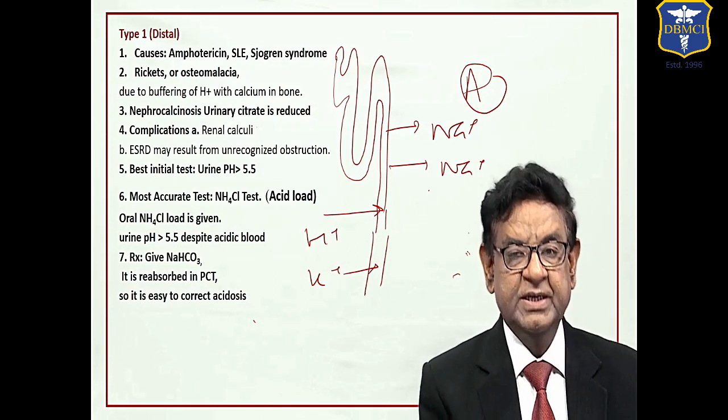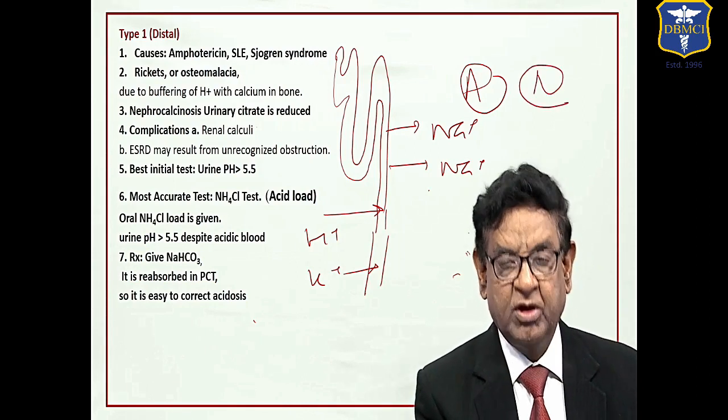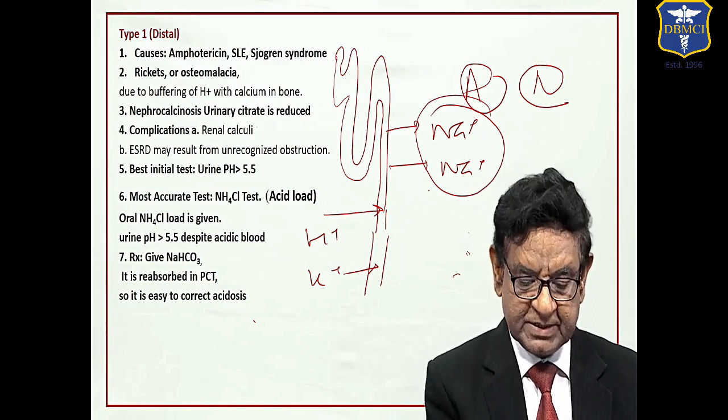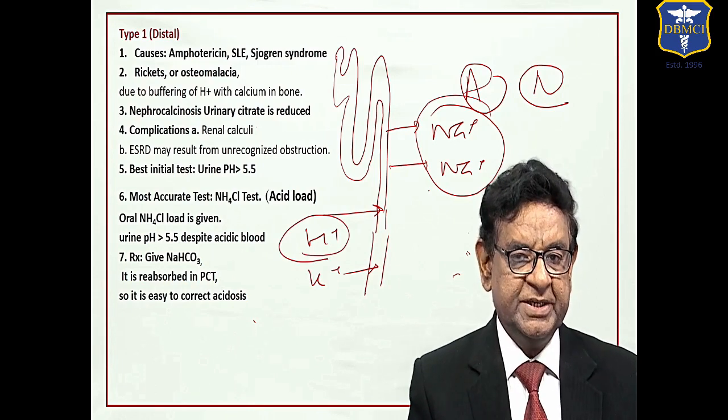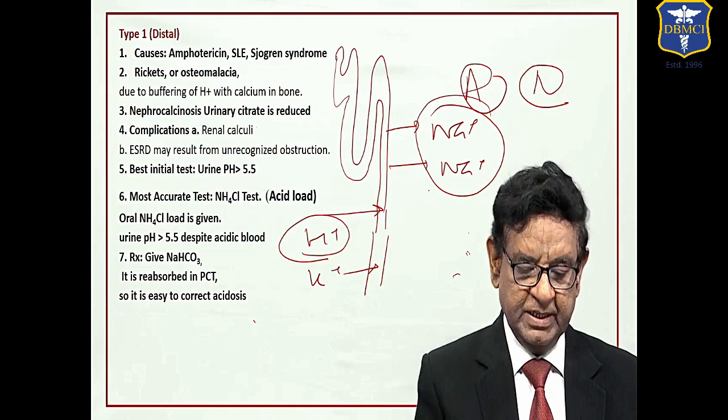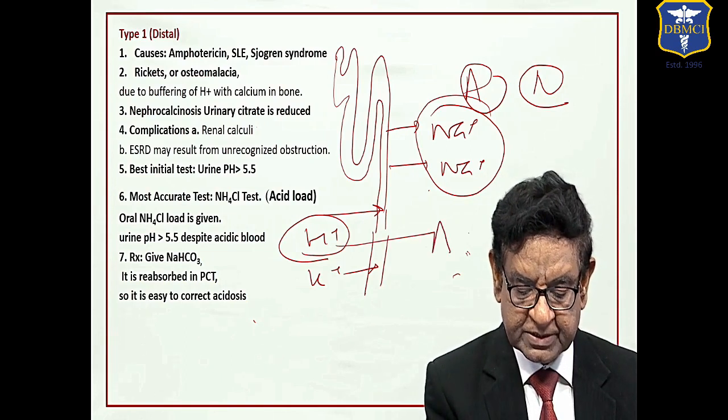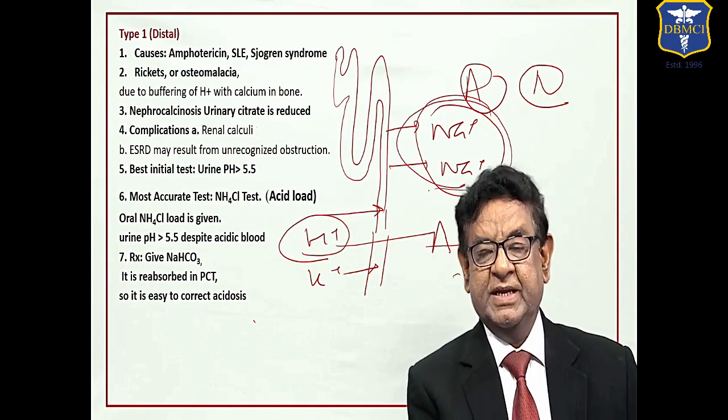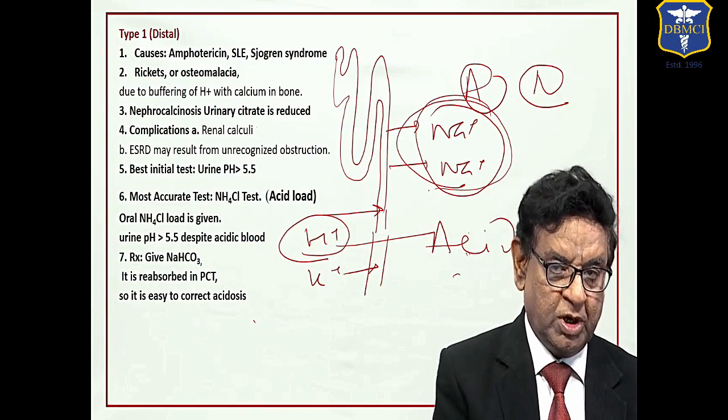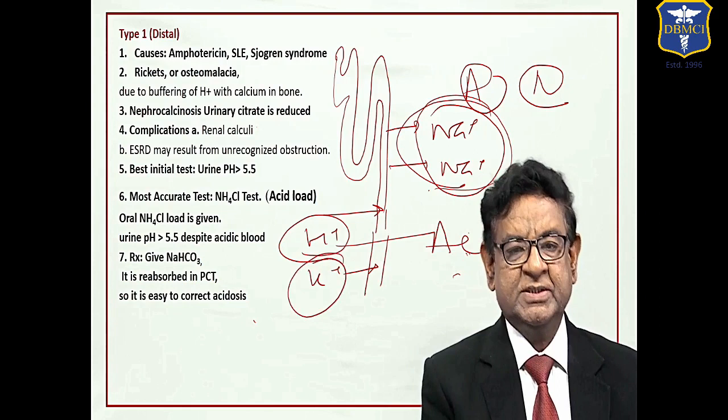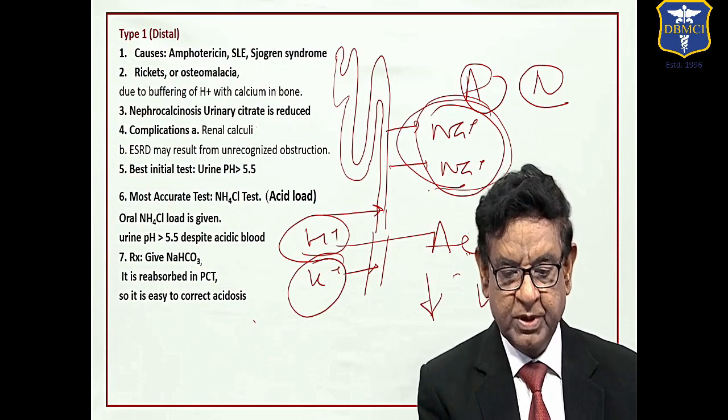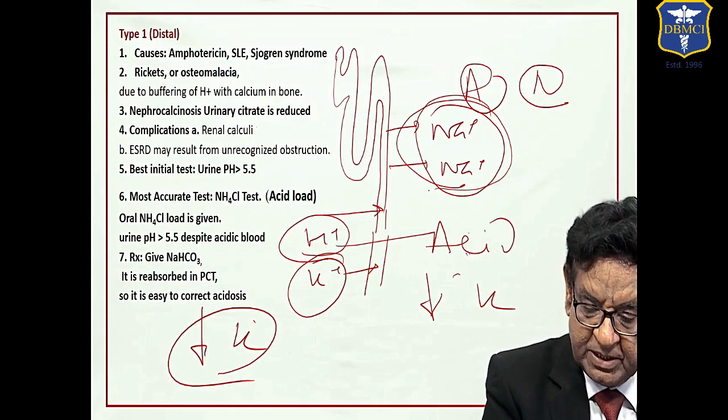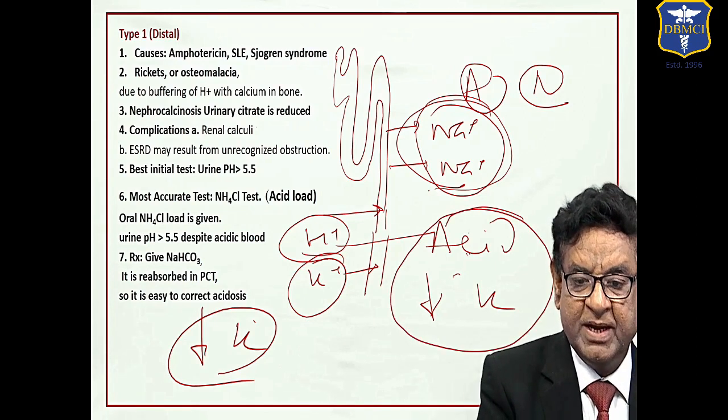In this case, as aldosterone level is normal, two sodium are absorbed as usual. The problem lies that H ion secretion interval is defective. H ion remains in the body that leads to acidosis. But remember, two sodium has come in and as per law of electrostate, body has to throw out two positive particles. Double potassium will go out that leads to profound hypokalemia. We have acidosis with hypokalemia in this case.